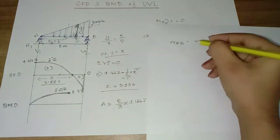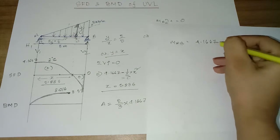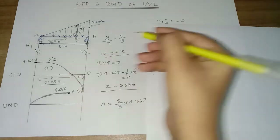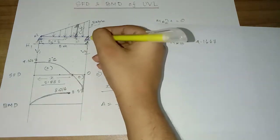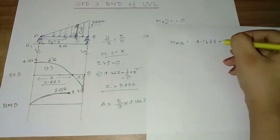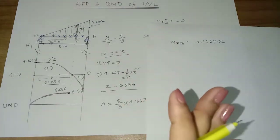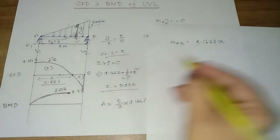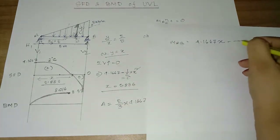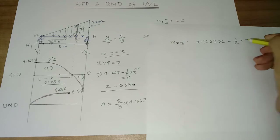V1 is 4.1667 kN. For the bending moment at a section at distance x from A: the moment equals V1 times x minus half into x squared, giving a 2nd degree function for the BMD.